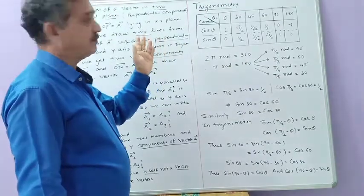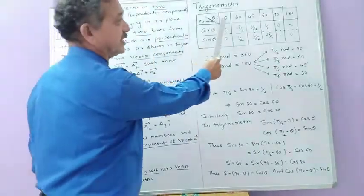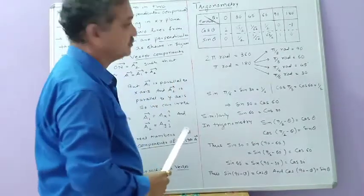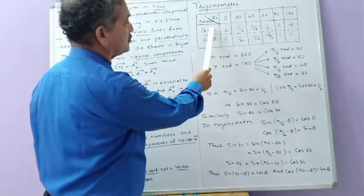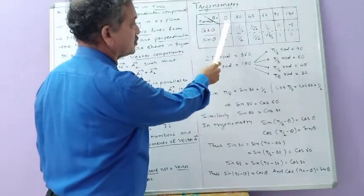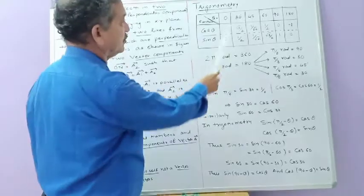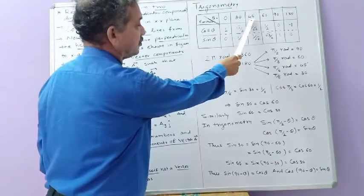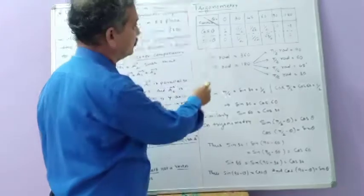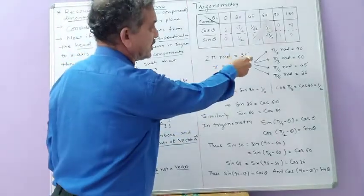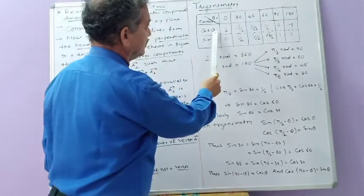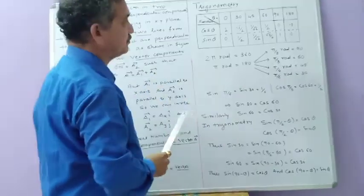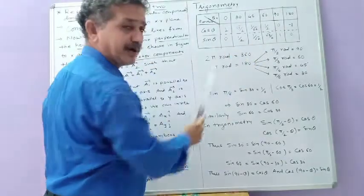Here one table is given. These are the theta values and these are the functions. Cos theta: cos 0° is 1, cos 30° is √3/2, cos 45° is 1/√2, cos 60° is 1/2, cos 90° is 0, and cos 180° is −1.